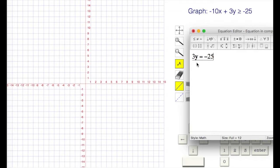Then I want to get the y alone, so I'm going to divide both sides by three, and that's going to give me y is equal to negative 25 divided by three, which is 3 goes into 25, 8 with one left over, so 8 and 1 third, so negative 8 and 1 third, or negative 8.3 repeating.